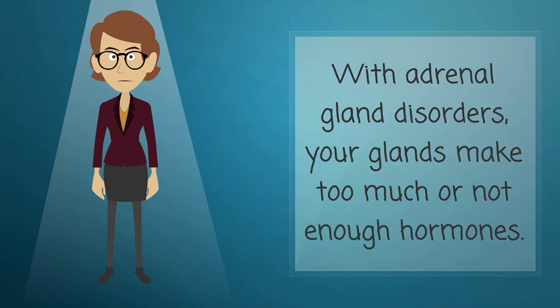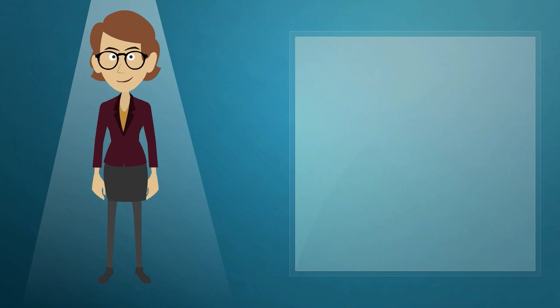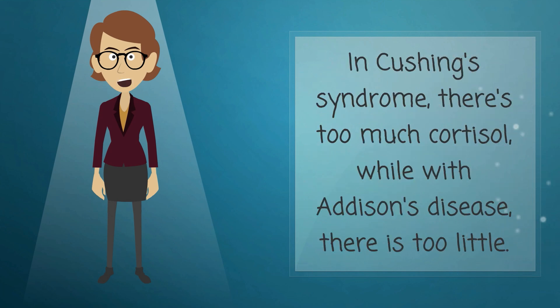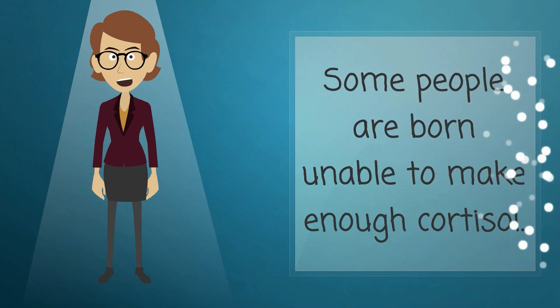With adrenal gland disorders, your glands make too much or not enough hormones. In Cushing's syndrome, there's too much cortisol, while with Addison's disease there is too little. Some people are born unable to make enough cortisol.